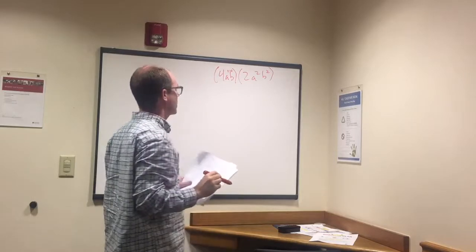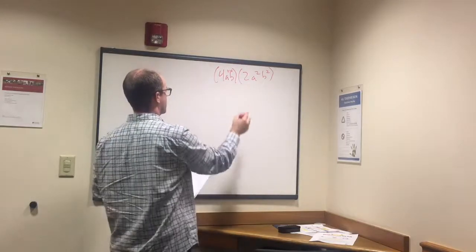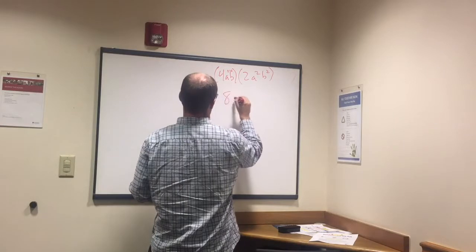And then we're going to add these together. So 4 times 2 is 8. Then we have an a to the 1 plus 2